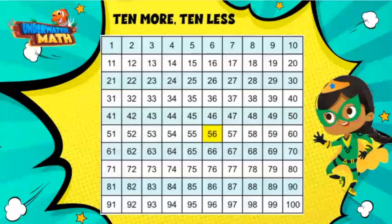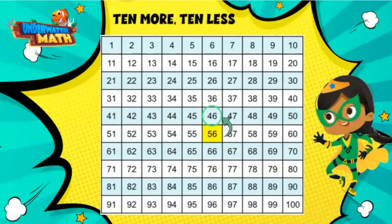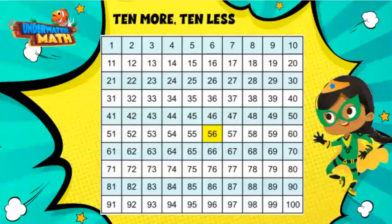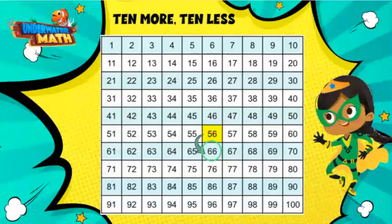Let's look at the number 56. Which number is 10 less than 56? Let's look one row up. The number 46 is 10 less than the number 56. What about 10 more? Let's look one row down. We land on the number 66. Super work!